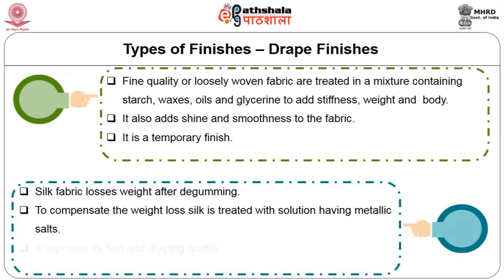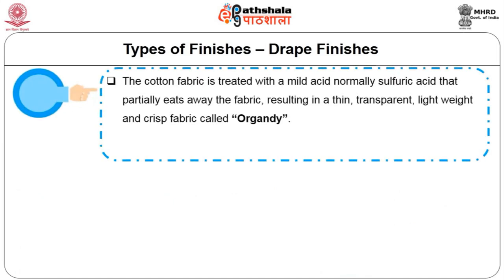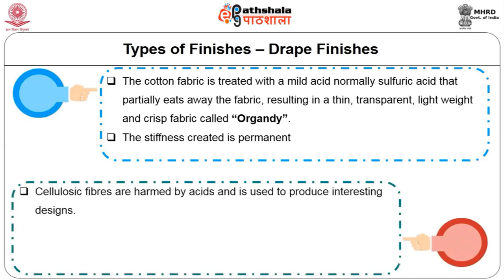In parchmentization, cotton fabric is treated with a mild acid — normally sulphuric acid — that partially eats away the fabric, resulting in a thin, transparent, lightweight and crisp fabric called organdy. The stiffness created is permanent. Burnt out finish: cellulosic fibers are harmed by acids. Controlled concentrations of acid, temperature and treatment time are used on a blend of cellulosic and non-cellulosic fibers to burn out some areas or make it translucent.